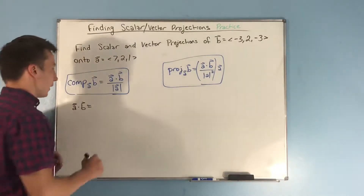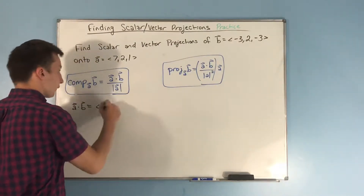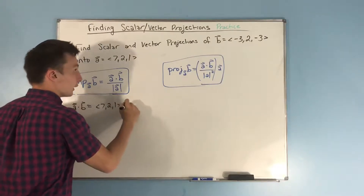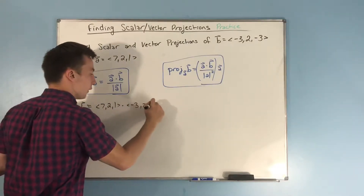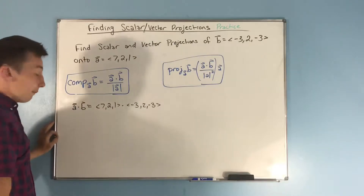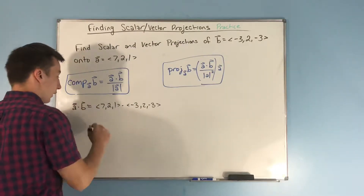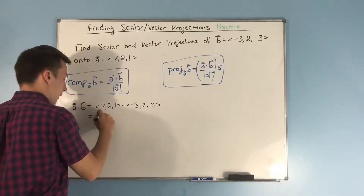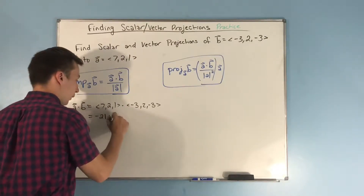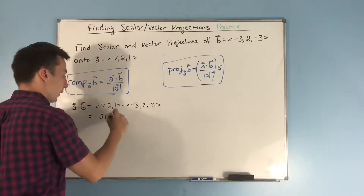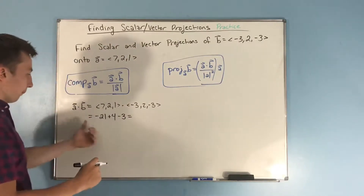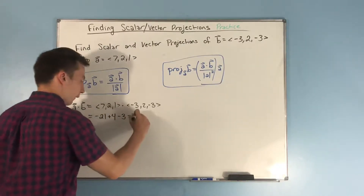A dot B is going to be (7, 2, 1) dot (−3, 2, −3). We have seven times negative three, that's negative 21; two times two is four; and one times negative three is negative three. This gives us negative 20.